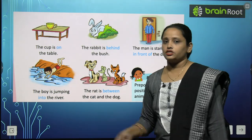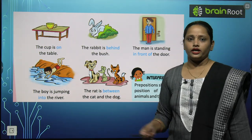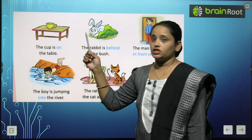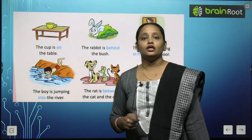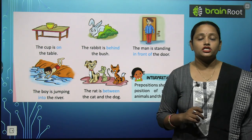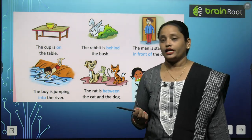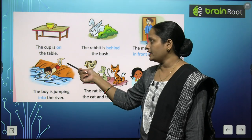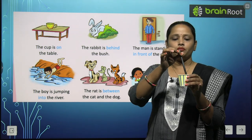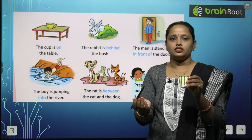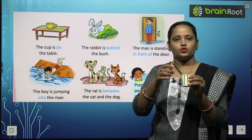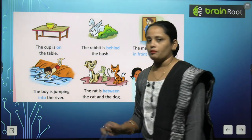Next, the boy is jumping into the river. Boy pehle yahan khada tha, lekin ab woh swimming karne ke liye apni position ko change karke water mein kood raha hai. Toh 'into' ka bhi use karte hain — it means position ko change karna, jaise land se water mein koodna. Maine pen ko cup mein chhod diya — usne apni position change ki aur cup mein chala gaya. So I have put this pen into the cup. Similarly, the boy is jumping into the river.